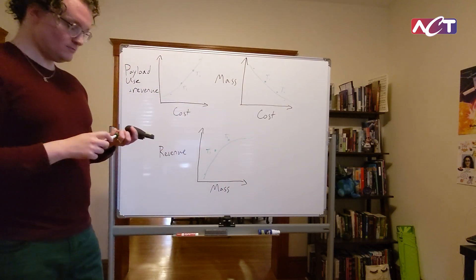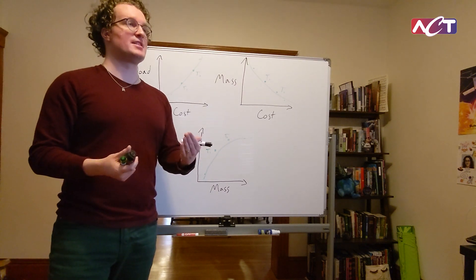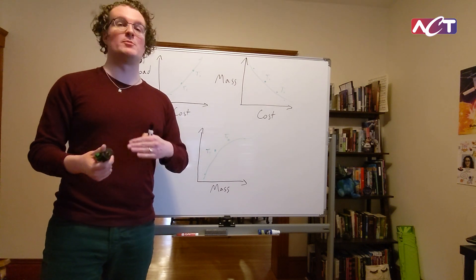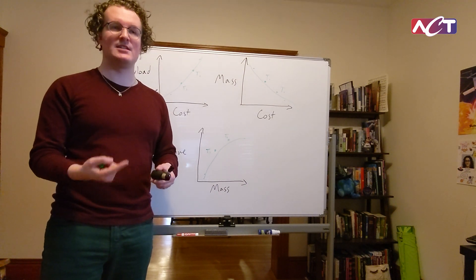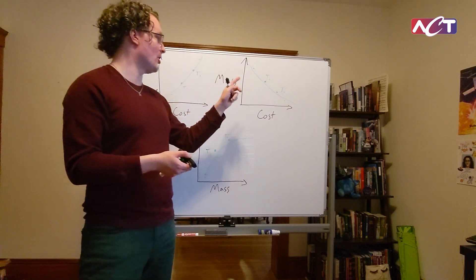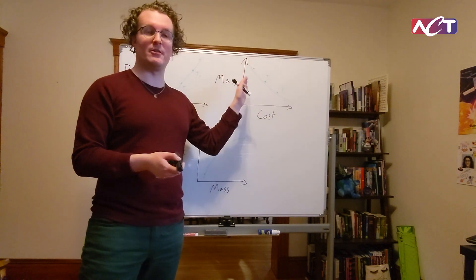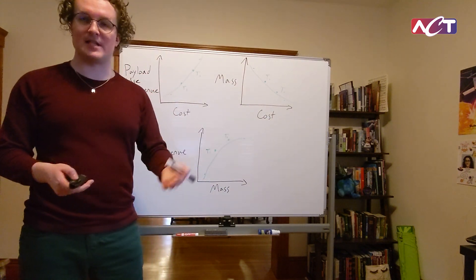So now because we have these lines, now we sort of have the price of each of our key metrics in terms of every other key metric, right? We know how many kilograms it costs to add 10% more payload power. We know how many kilograms it costs to reduce our radiator cost by a certain amount of money, et cetera, et cetera.